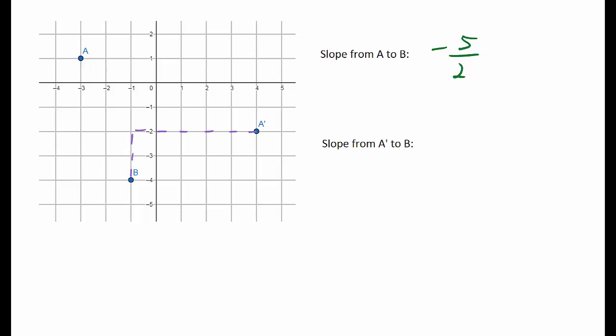Moving left to right from B to A prime, we need to go up 2 and right 5. That gives us a slope of 2 over 5. We notice these slopes are opposite reciprocals and this makes sense because the lines connecting the points are perpendicular. So we can use slopes to help us find 90 degree rotations.